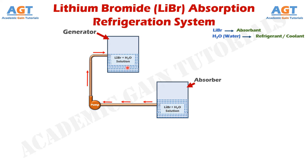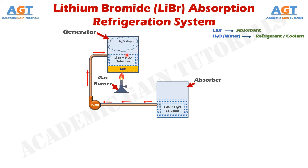When the solution of lithium bromide and water reaches the generator, here we have a gas burner. Using this gas burner, we provide flame and heat to this solution inside the generator. The function of the gas burner is to provide heat to the generator, and when heat is applied to this solution, water is converted to vapor. When water from this solution turns into vapor, only lithium bromide is left in the generator. Then the generator sends this lithium bromide back to the absorber through this connecting pipe.